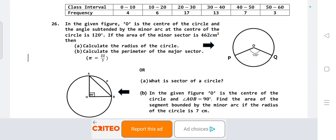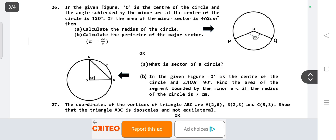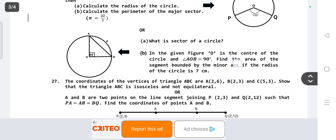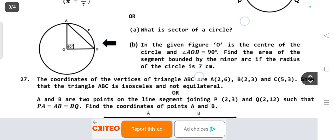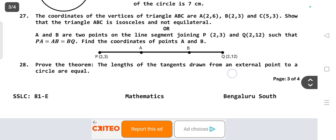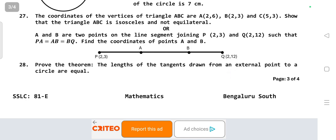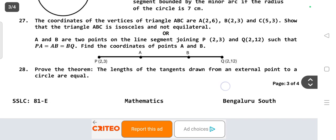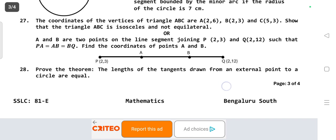OR: What is a sector of a circle? In the given figure, O is the center of a circle and angle AOP equals 90 degrees. Find the area of the segment bounded by the minor arc if the radius of the circle is 7 centimeters. The coordinates of the vertices of triangle ABC are A(2,6), B(2,3), and C(5,3). Show that triangle ABC is isosceles and not equilateral.